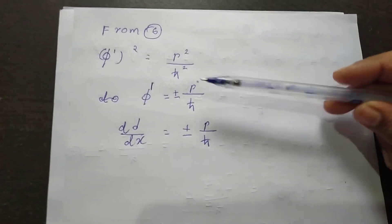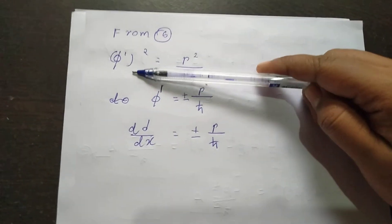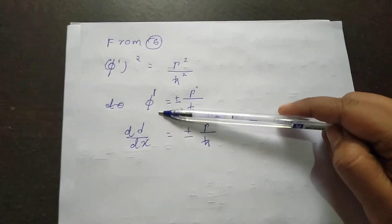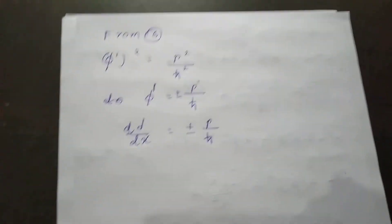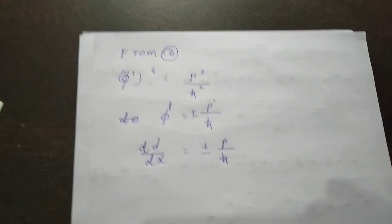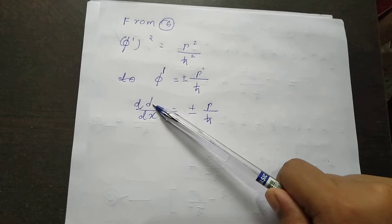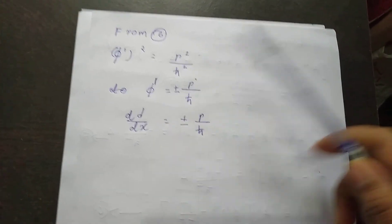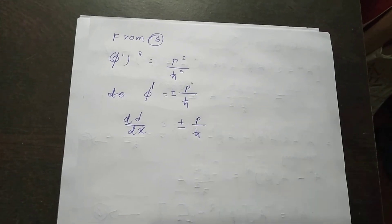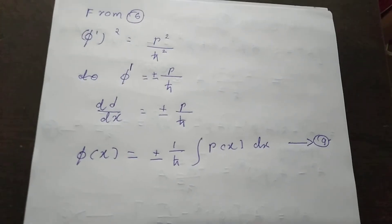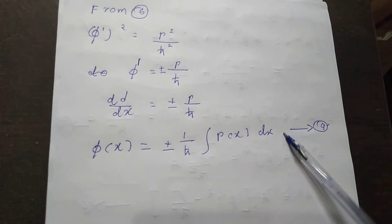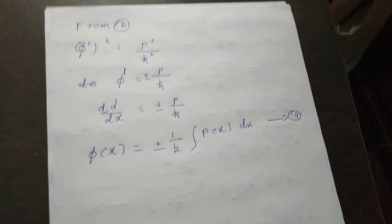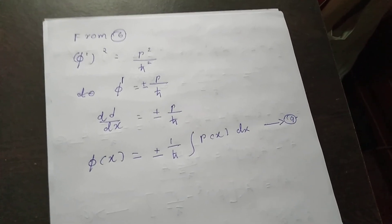Dropping A double dash from equation number 6, we get phi dash squared equals p squared by h-cut squared, so phi dash equals plus or minus p by h-cut, that is d phi by dx equals plus or minus p(x) by h-cut.